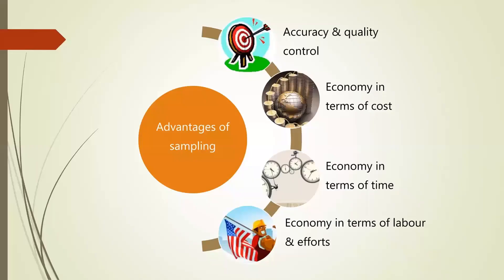Let me give one more example of simple random sampling. Suppose there are 250 employees in a company. I cannot study all 250 people at a time, so I have selected 25 people randomly and asked them questions about job satisfaction. Those 25 people are represented as a sample. This type of taking a sample is called simple random sampling. In the next lecture, we will see the advantages of sampling.